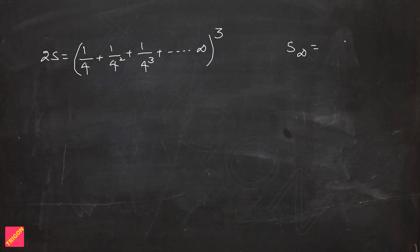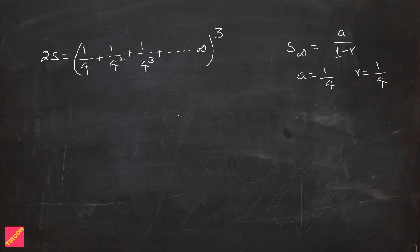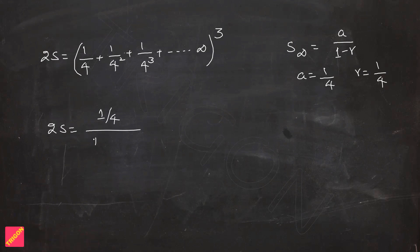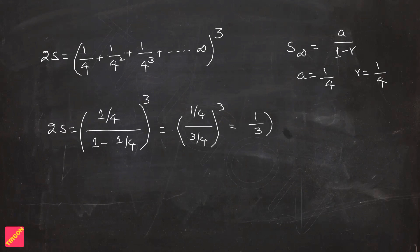The sum of an infinite geometric progression is a/(1−r), where a is the first term and r is the common ratio. Here both a and r equal 1/4. So the sum of one series is (1/4)/(1 − 1/4) = (1/4)/(3/4) = 1/3. Therefore 2S = (1/3)³ = 1/27.